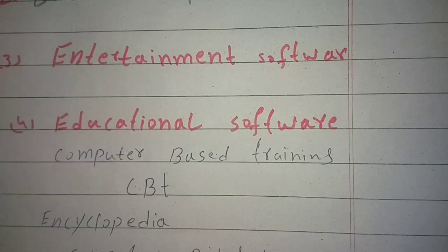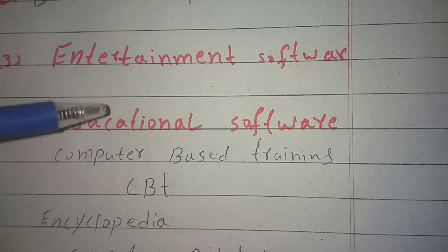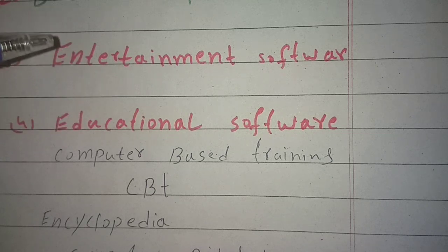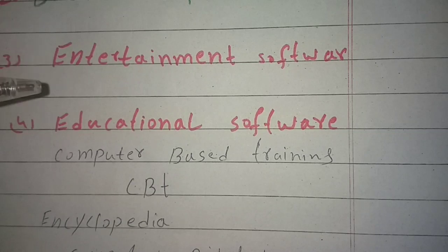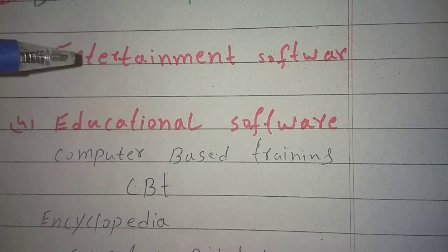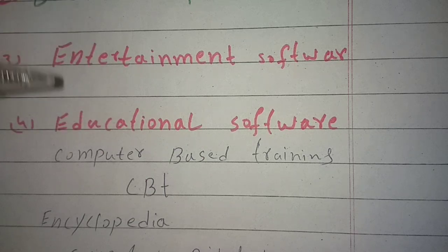Educational software is used in a computer system as a teaching and learning tool. For example, CBT (computer-based training) is application software used for the purpose of training. Examples of CBT include training pilots how to fly an airplane and training doctors in surgeries.